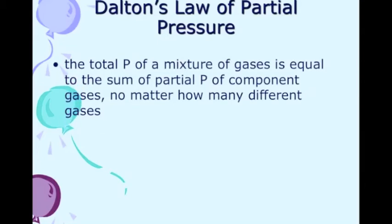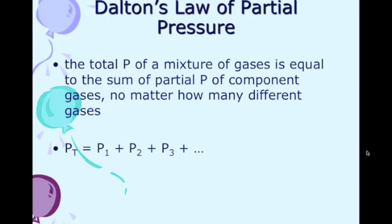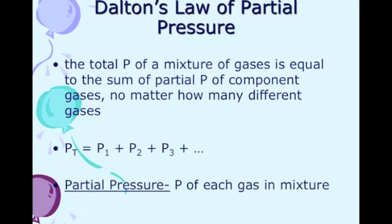So this is his actual law. It states that the total pressure of a mixture of gases is equal to the sum of each of the pressures of the component gases. It doesn't matter how many different gases you have — the pressure of each individual gas will add up to make the total pressure. So it looks like: P_total = P1 + P2 + P3 + ... And partial pressure is defined as the pressure of each individual gas in the mixture.